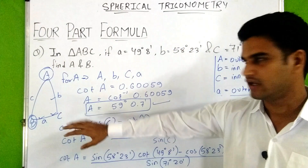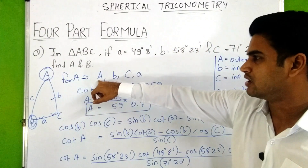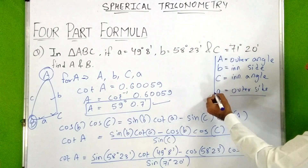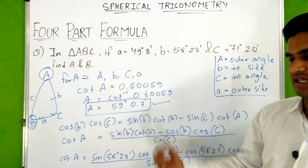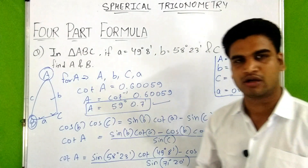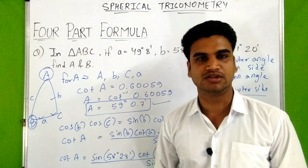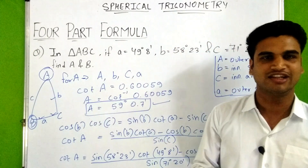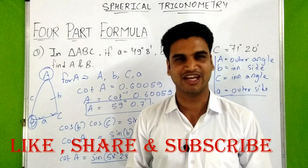So to summarize, you have to consider the consecutive parts. For A we go clockwise: capital A, small b, capital C, and small a. Then name them, apply the formula, put in the values, and you get capital A. This is how you solve numericals using the four part formula. I will give more questions at the end of the video. Please like, share, and subscribe to the channel. Thank you.